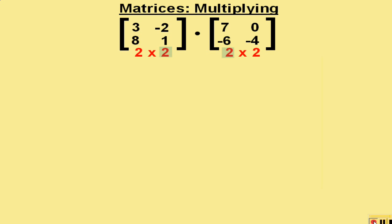If they are matched, they can be multiplied and the resulting matrix will be the outside numbers. And so these two will be multiplied and the answer will be another 2 by 2 matrix.